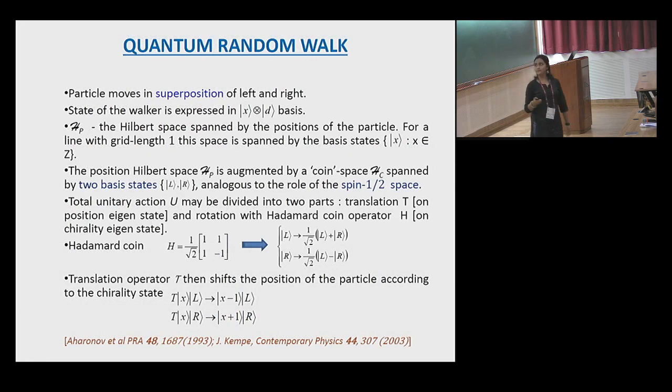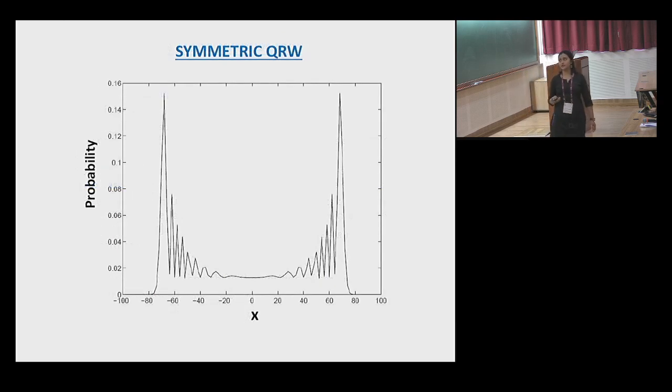Now, let us move to quantum regime. It's a quantum random walker. In every time step, it moves in superposition of left and right. The state of the walker is expressed in X-D basis, where X is the position eigenstate and D is the chirality eigenstate. We toss a Hadamard coin instead of a classical coin, which operates on the chirality. This is the typical occupation probability for different sites for a symmetric walker, where the walker was initially with equal superposition of left and right chirality states.